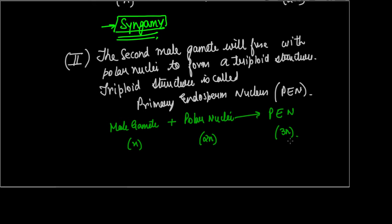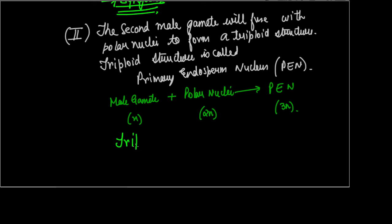This process of fusion between the second male gamete and the polar nuclei is called triple fusion. It is called triple fusion because the male gamete (n) fuses with two polar nuclei (together 2n) to form three sets of chromosomes (3n). Since there is a fusion between the male gamete and two polar nuclei, it is called triple fusion, forming the primary endosperm nucleus — a triploid structure.